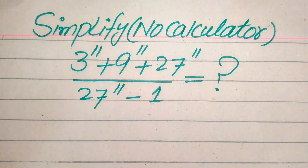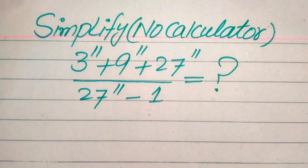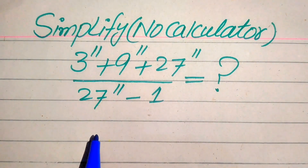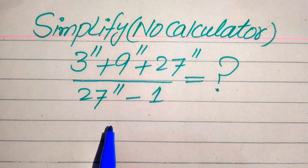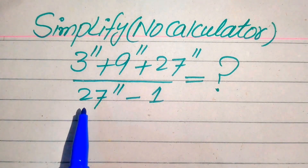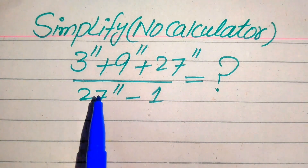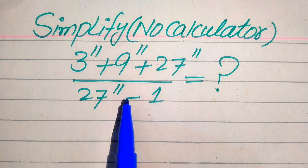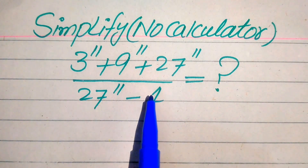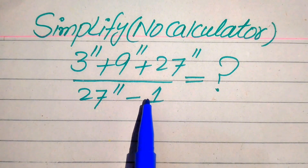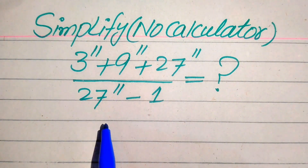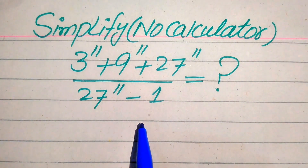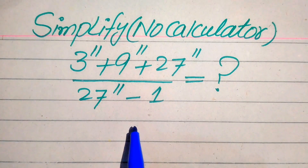Hello everyone, today I want to show you how to simplify this nice algebraic expression: 3 to the power of 11 plus 9 to the power of 11 plus 27 to the power of 11, divided by 27 to the power of 11 minus 1.